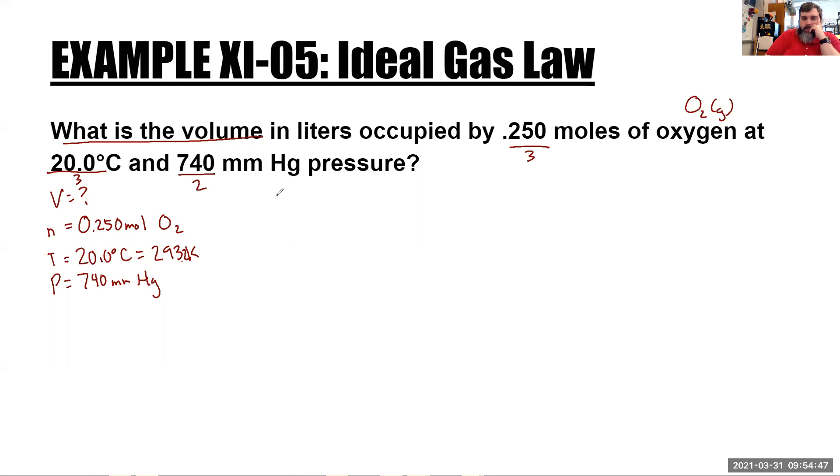We're looking for volume. So since we have V, n, T, and P, we're going to use PV equals nRT. And of course, this is on the reference table. You don't have to memorize it, but we're looking for V. So to get V by itself, we divide both sides by P. That gives us this. So we're just going to plug it in. So n is 0.250 moles.